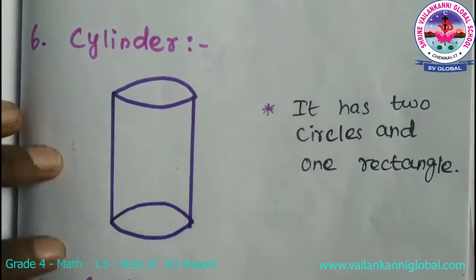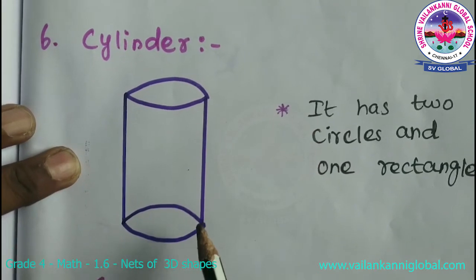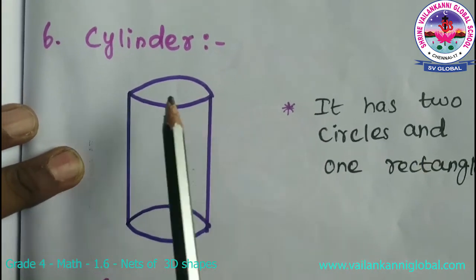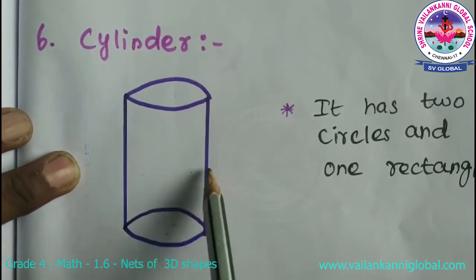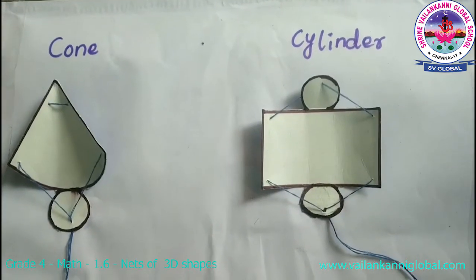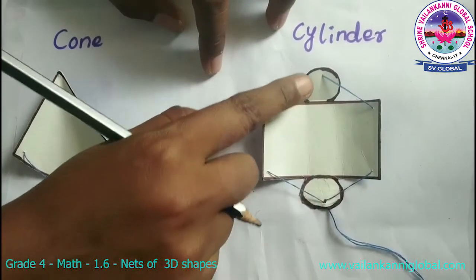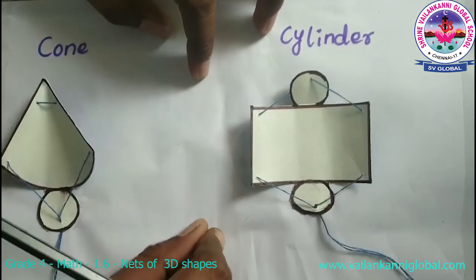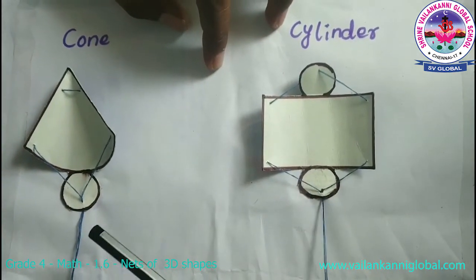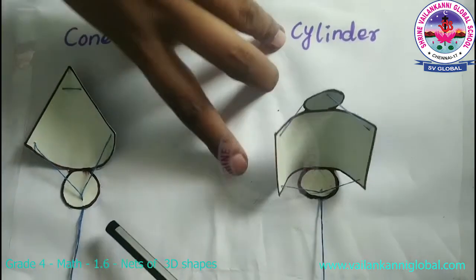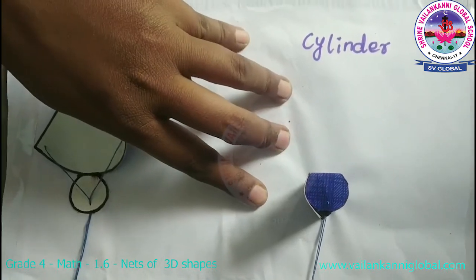The next shape is cylinder. For the cylinder, it has two circles and one rectangle. This is the net of cylinder shape — it has two circles and one rectangle shape. Now we are going to make a cylinder shape by using this net. See, it's a cylindrical shape.